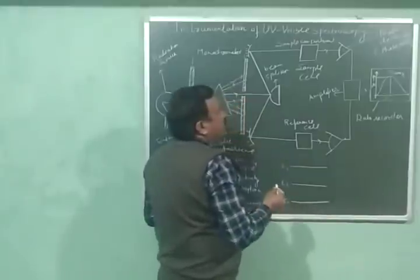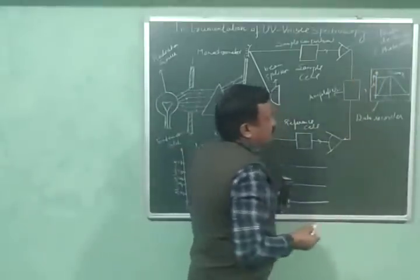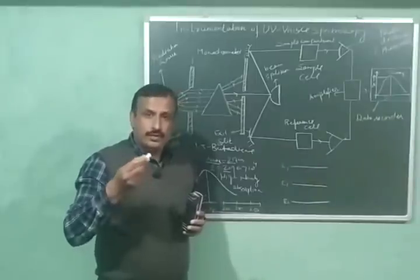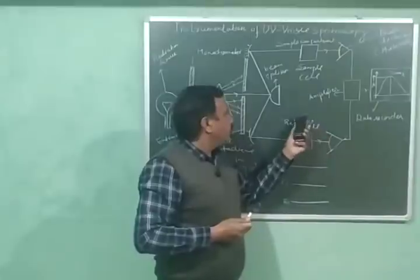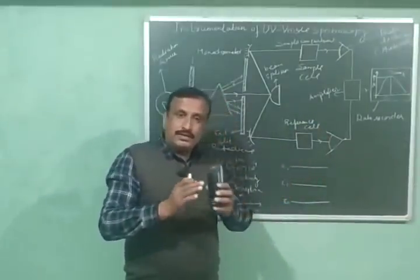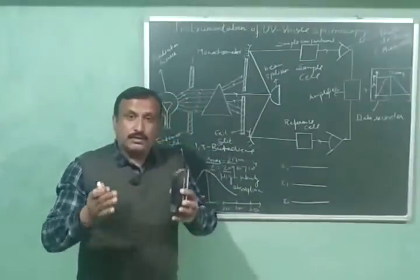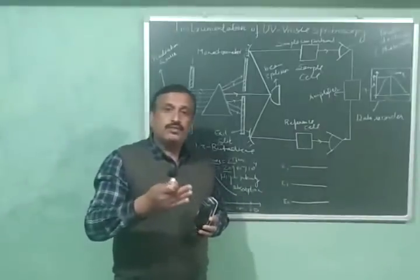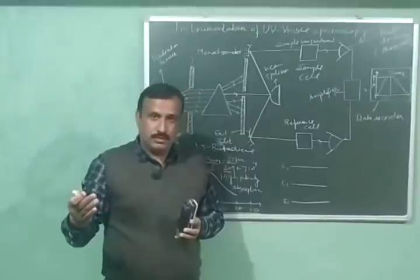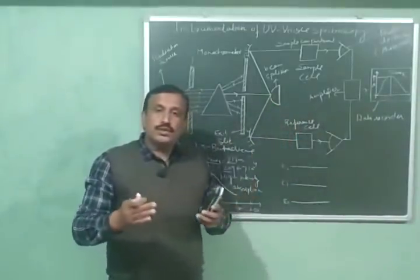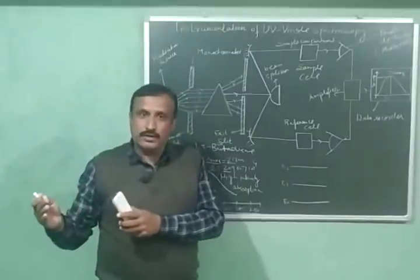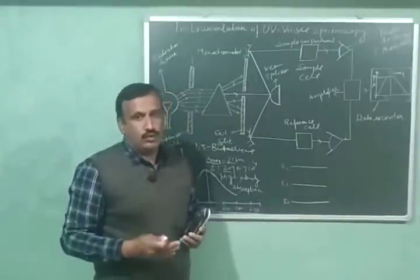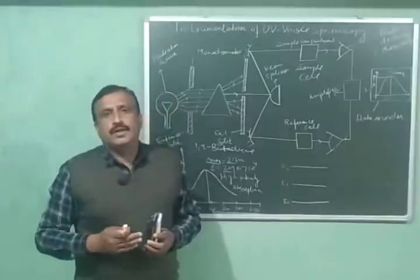The intensities of transmitted light from the sample cell and the reference cell are measured with the help of photo detectors having photo cells. The photo detector also calculates the ratio of intensities of the beams transmitted from the sample cell and the reference cell. The instrument automatically subtracts the absorbance due to the solvent from the absorbance of the solution, so we are left with the absorbance only due to the sample.